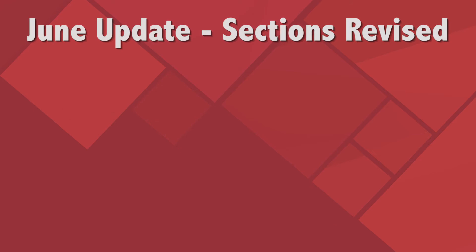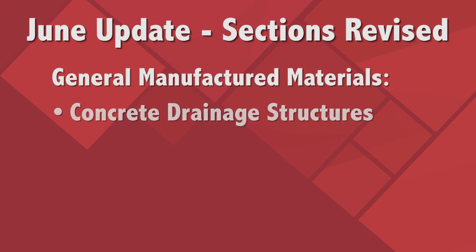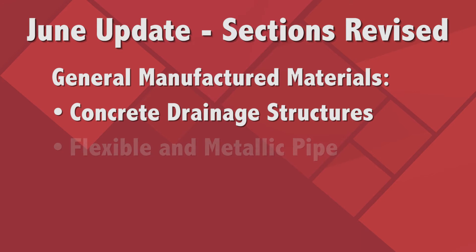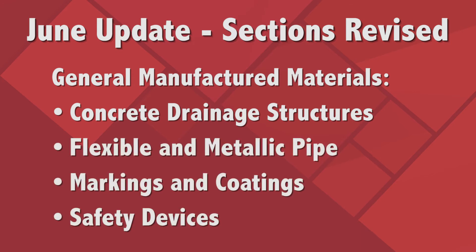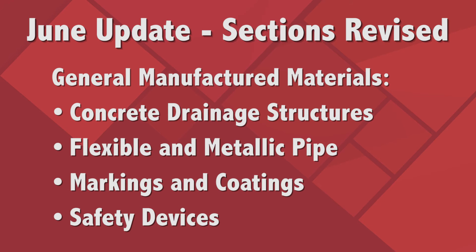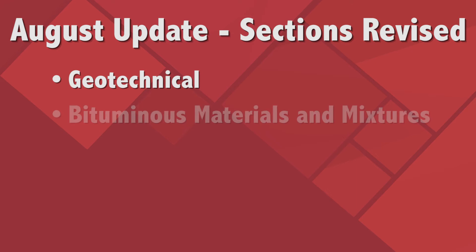The June update revises the sections on general manufacturing materials, including concrete drainage structures, flexible and metallic pipe, markings and coatings, and safety devices. And the August update revises the sections on geotechnical and bituminous materials and mixtures.